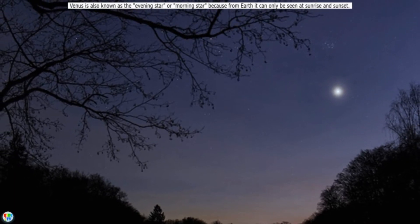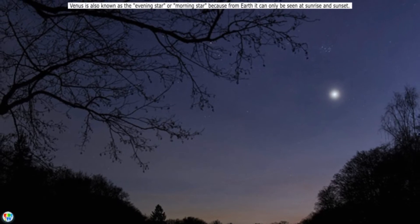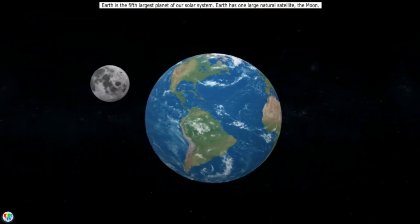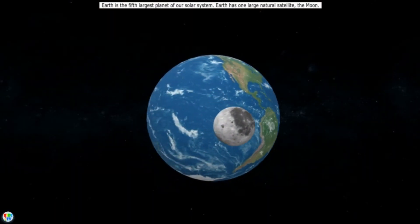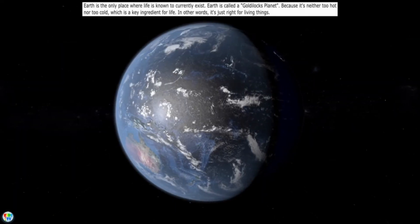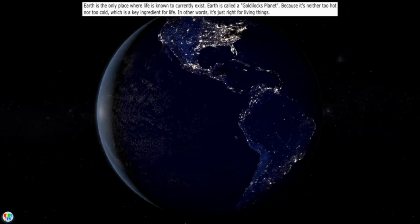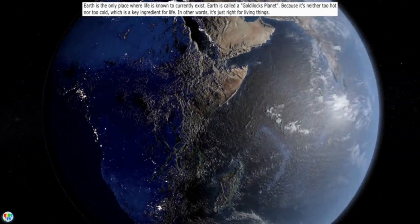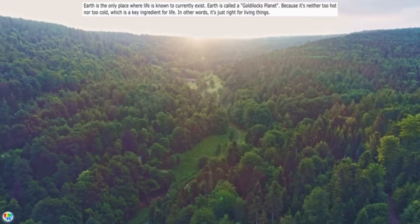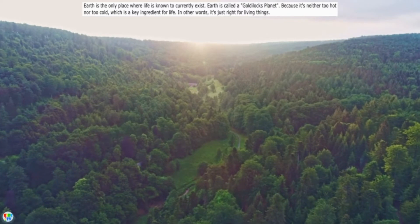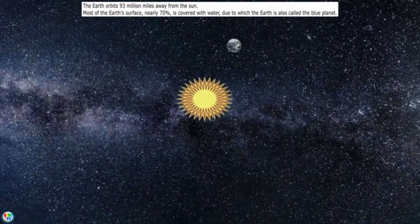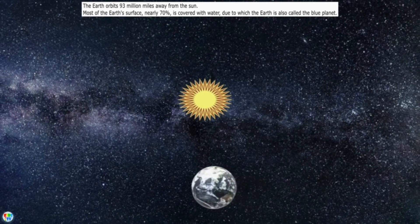Earth, the third planet from the Sun, is the planet where we live. Earth is the fifth largest planet of our solar system. Earth has one large natural satellite, the moon. Earth is the only place where life is known to currently exist. Earth is called a Goldilocks planet because it's neither too hot nor too cold, which is a key ingredient for life. In other words, it's just right for living things. The Earth orbits 93 million miles away from the Sun.